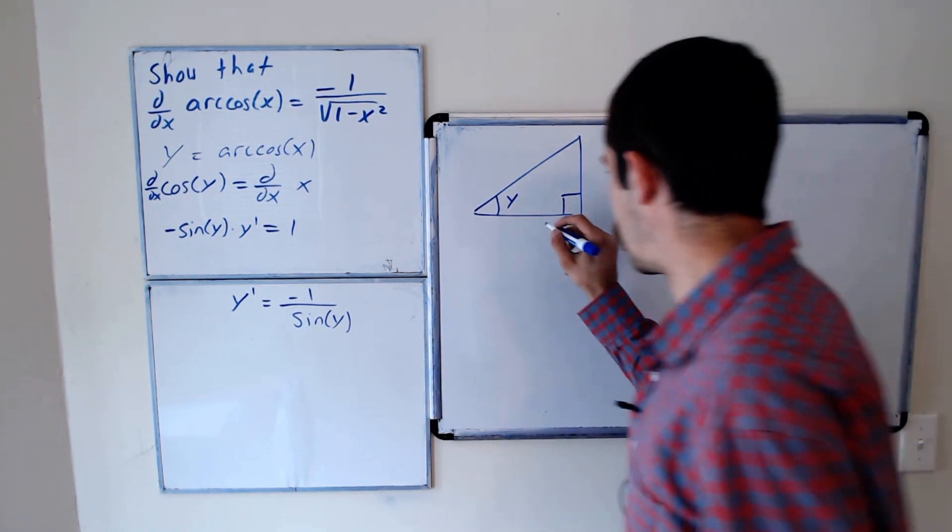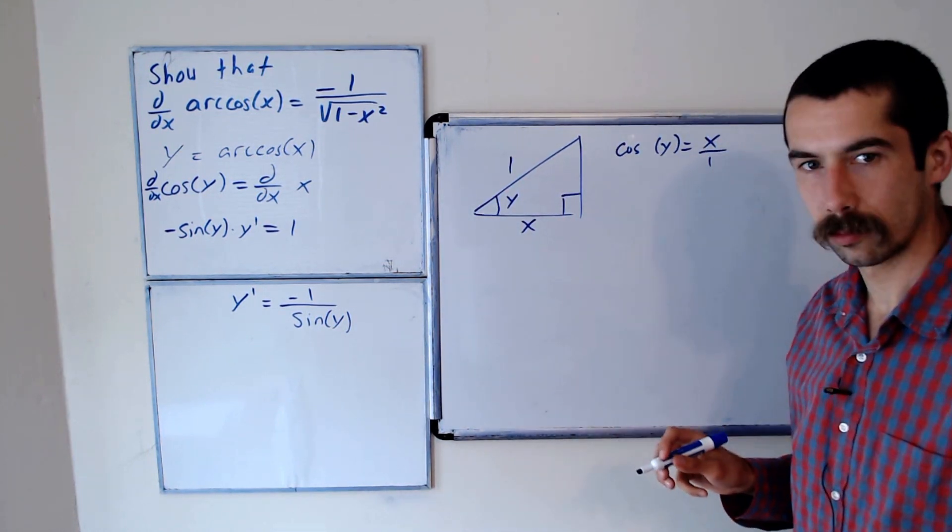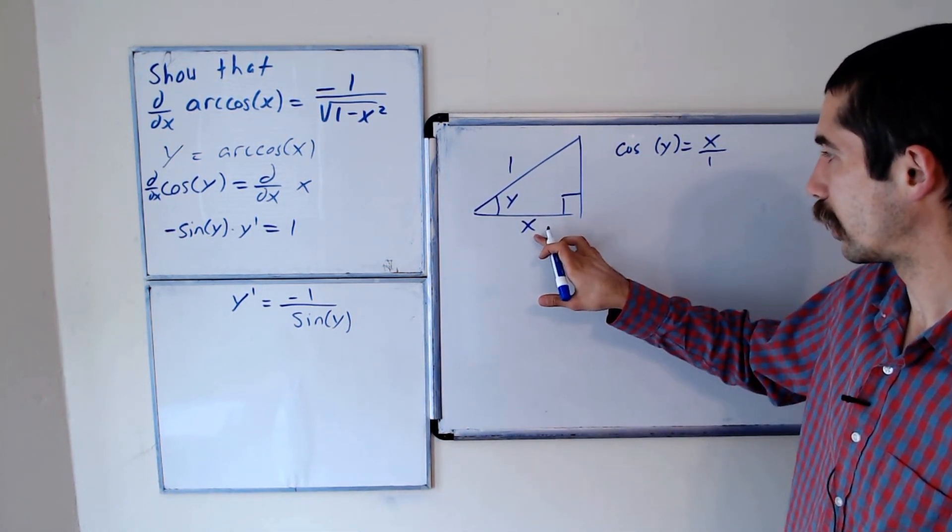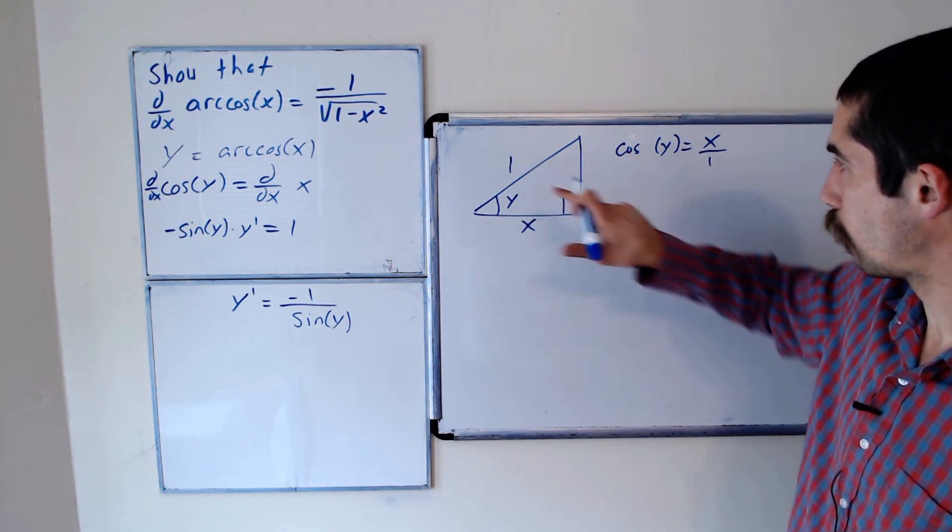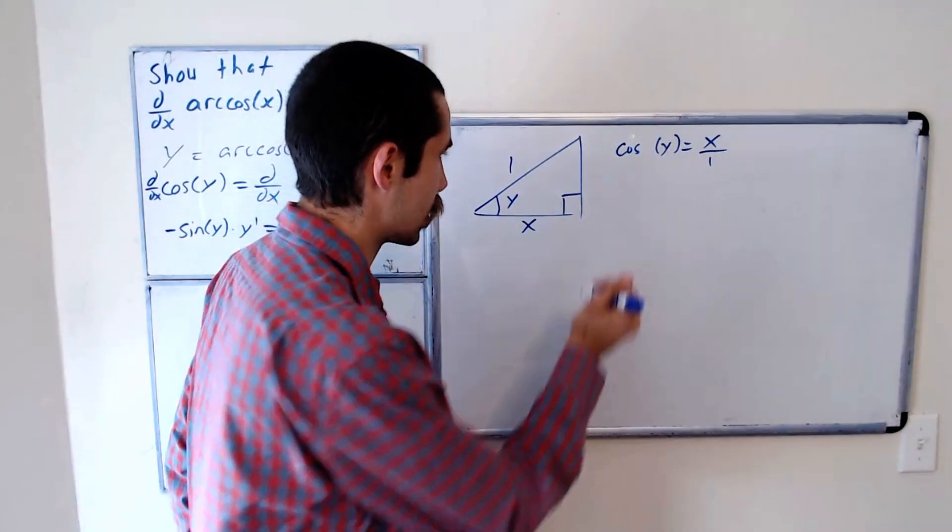So cosine of y is adjacent over hypotenuse. So we have cosine of y is x over 1. We could get the opposite leg using the Pythagorean theorem. So let's call this a.